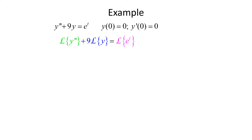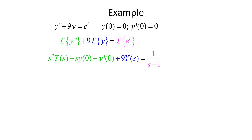When we take those Laplace transforms, we get s squared Y(s) minus s times y(0) minus y prime(0) plus 9 Y(s) equals 1 over s minus 1. We know y(0) equals 0 and y prime(0) equals 0, so we plug in our initial conditions. Those two middle terms go away, leaving s squared Y(s) plus 9 Y(s) equals 1 over s minus 1.